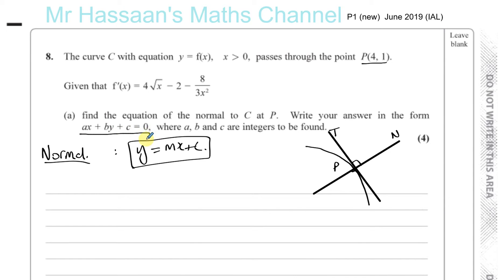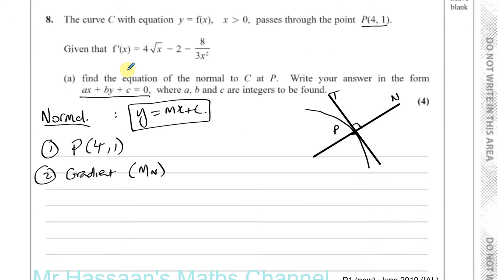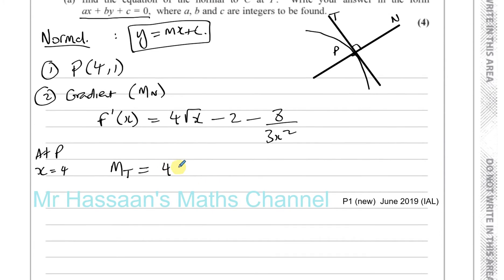A straight line is in the form y = mx + c. To find the equation of a straight line you need two things: a point on the line, which is point P given to us, and the gradient of the line. We need the gradient of the normal to the curve. We can use the gradient function f'(x) already given. At point P, x = 4, so we find the gradient of the tangent by substituting x = 4.